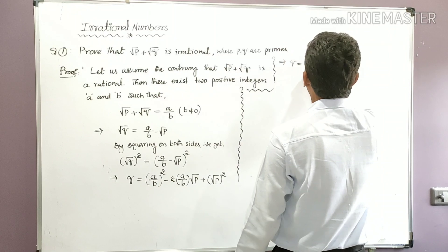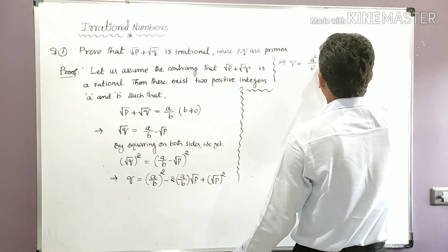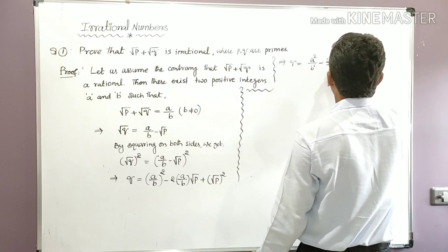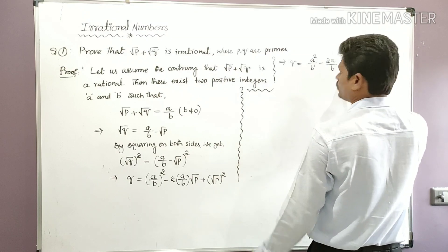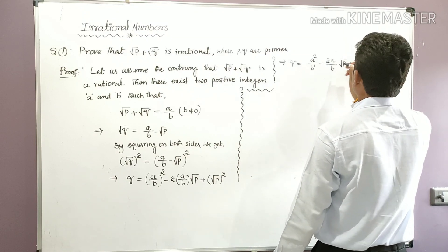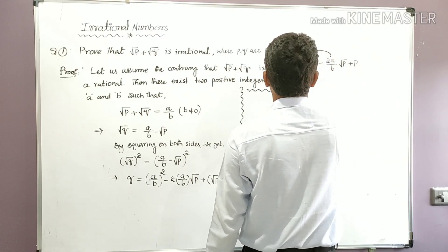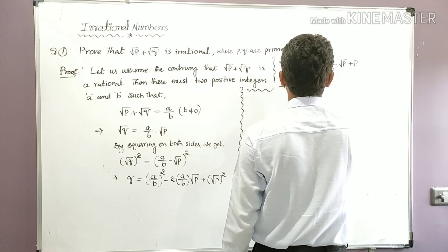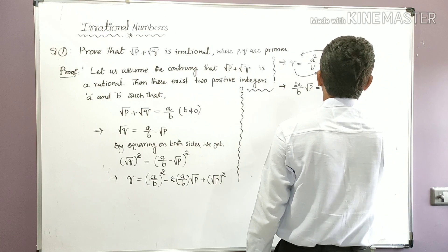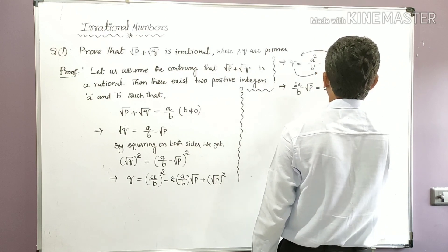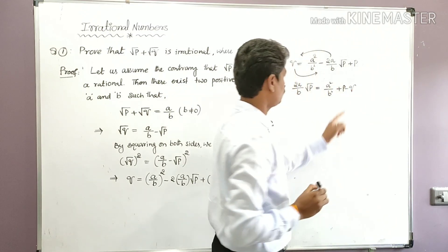So q = a²/b² − 2(a/b)√p + p. Now take this total term to the left side and q to the right side. Then 2(a/b)√p = a²/b² + p − q.